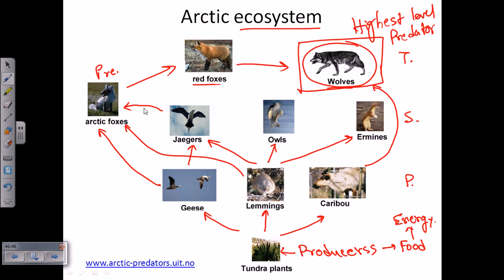For example, if you take the arctic fox out of the scene, the jaeger population will rise, they will take more geese, so the geese population will fall and the lemming population will fall. If lemming population falls, owls will not survive because they feed on lemmings, and ermines will not survive because they also feed on lemmings.